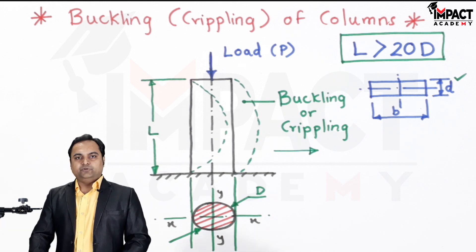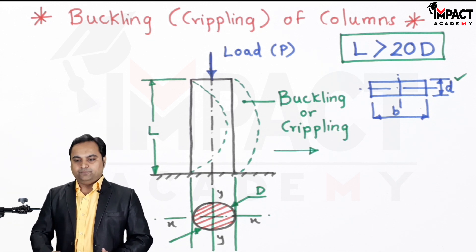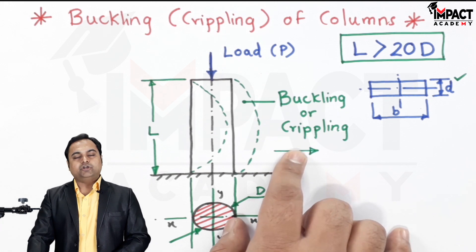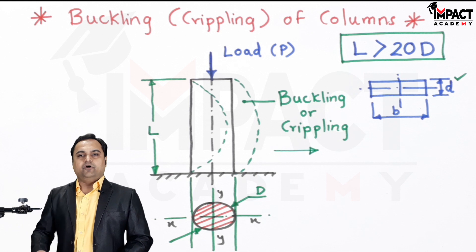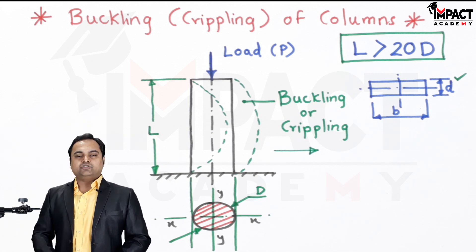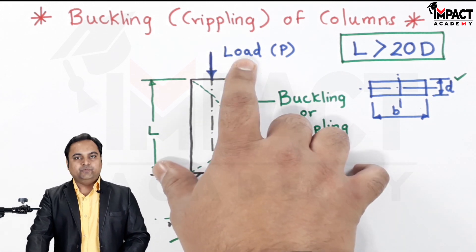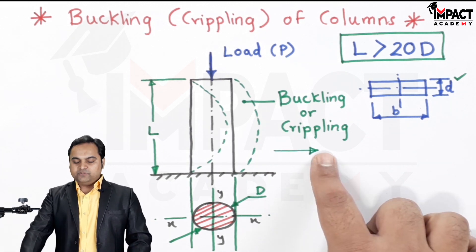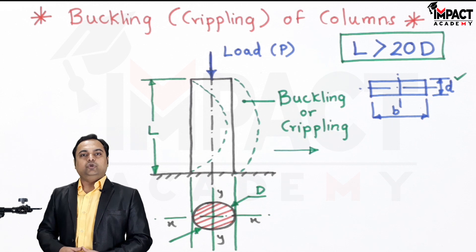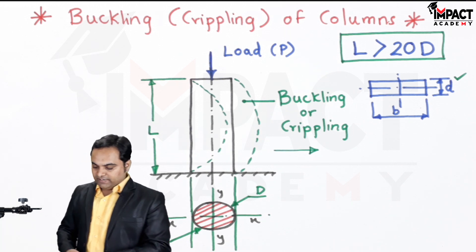In order to avoid this, we actually need to find the value of load which should be kept over the column so that it does not buckle or cripple. That calculation can be made by two theories or two formulas: one is called Euler's formula and the other is called Rankine's formula. By using these formulas we can get the value of load which should be kept on the column.